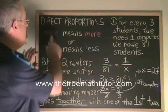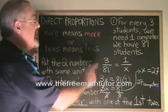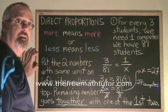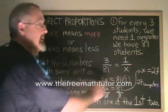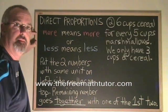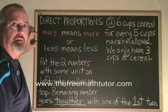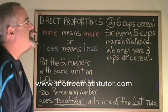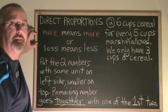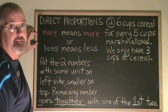This is how we use the more means more or less means less analysis to make sure we build our proportions correctly and get an answer that makes sense. In this second example, we need six cups of cereal for every five cups of marshmallows for a recipe. We only have three cups of cereal.